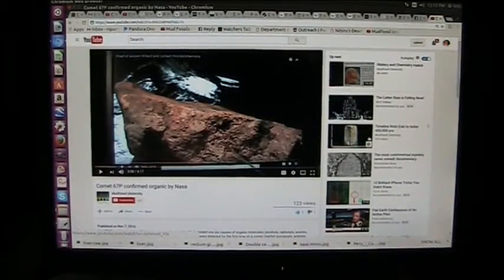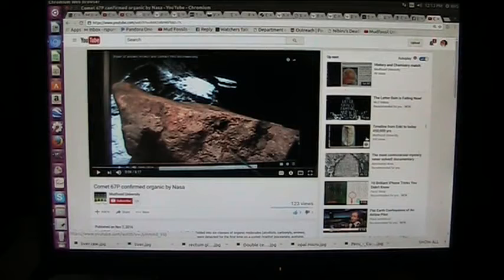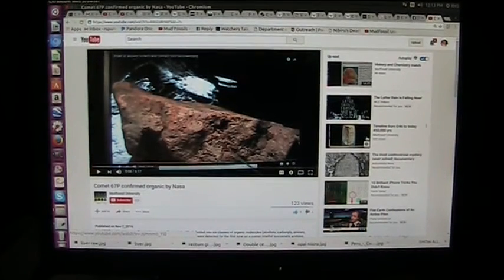What I want you to do is go to Mud Fossil University on YouTube. If you want to see if things in space are literally alive, which they are, look at this video. It's called Comet 67P Confirmed Organic by NASA, which it is, 100% organic. It is a tendon, a piece of meat floating in space. Let Stephen Hawking explain his theories of black this and dark that. It's all fantasy, because what we really have here is life. The universe is made of life.